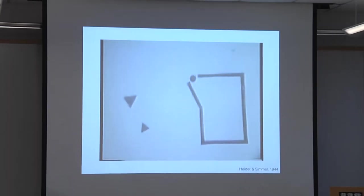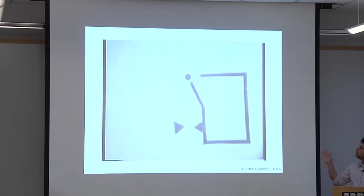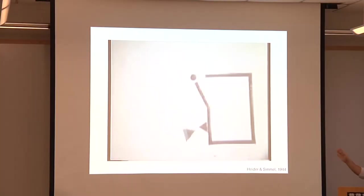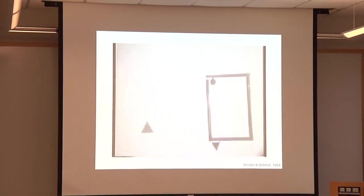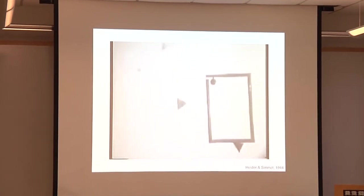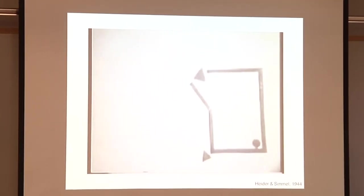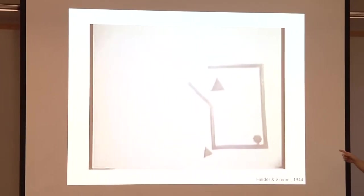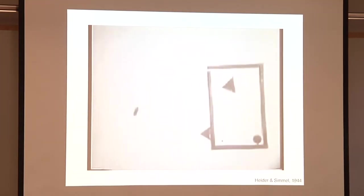Most people won't describe the scene in a literal way. They don't say the circle moved to the middle of the screen and the triangle moved a little bit to the right, then back, then right, then left, then right. Instead, we describe these shapes as intentional agents with beliefs, desires, and goals. You might say one of the triangles is hiding, the circle is hiding in fear, or the big triangle is a bully. You can make judgments about these characters — who's good, who's evil, who's acting right and who's wrong.